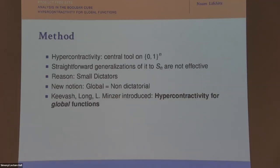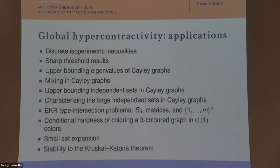For the settings with set I of size √n, the density is 1/√n, which is still small — about 2/√n. This difference — where dictators are large on the Boolean cube but small in the symmetric group — makes hypercontractivity not work as effectively in the symmetric group, leading to the notion of hypercontractivity for global functions.